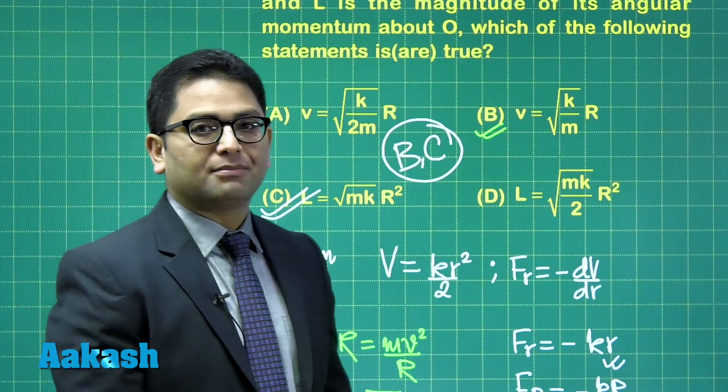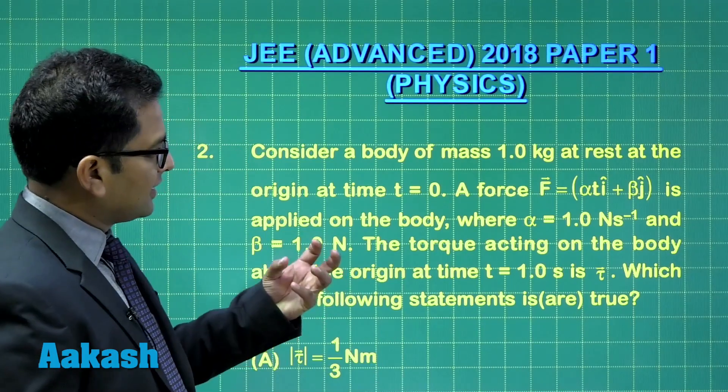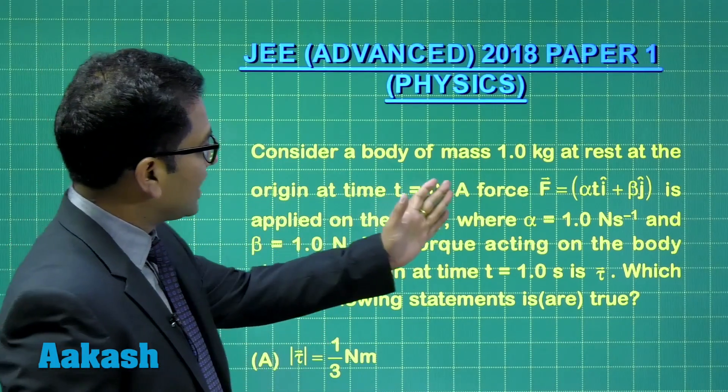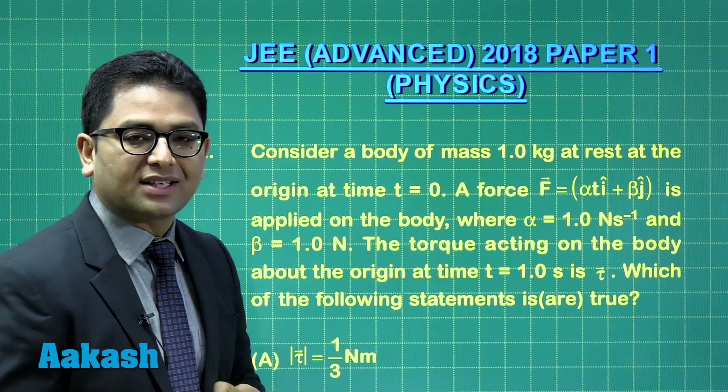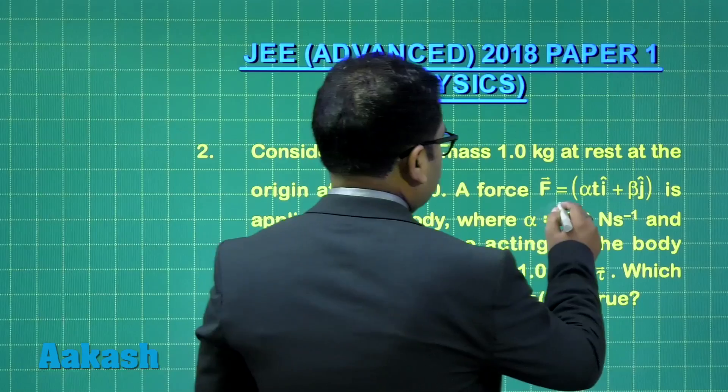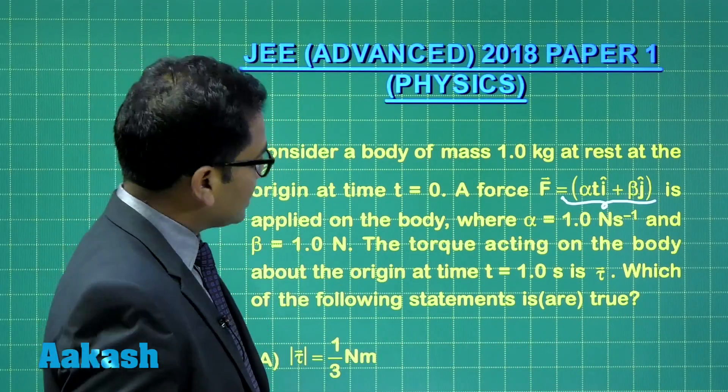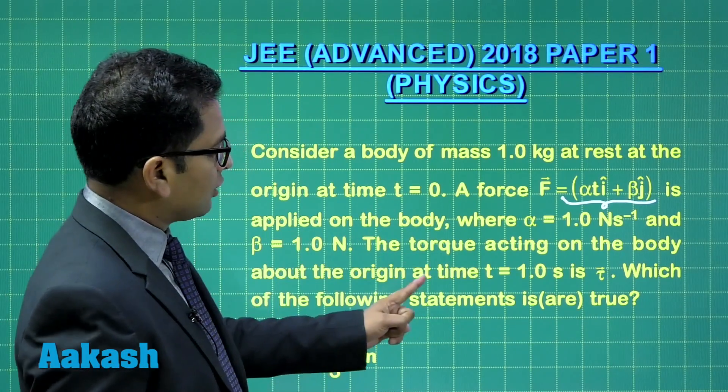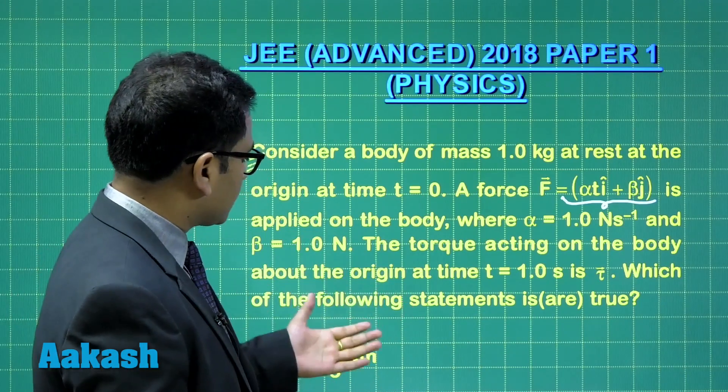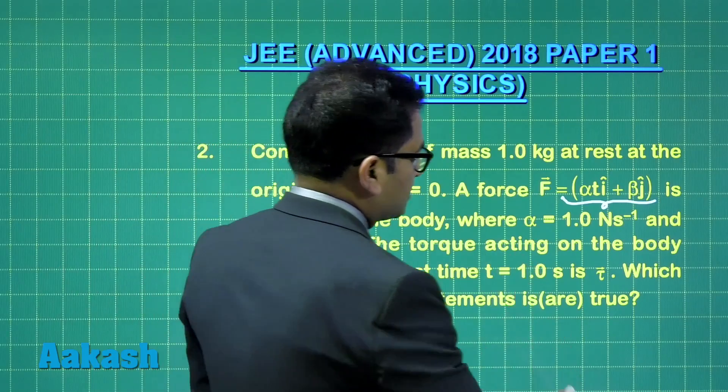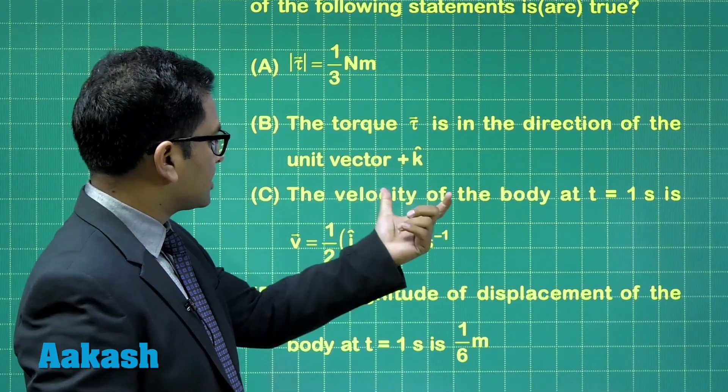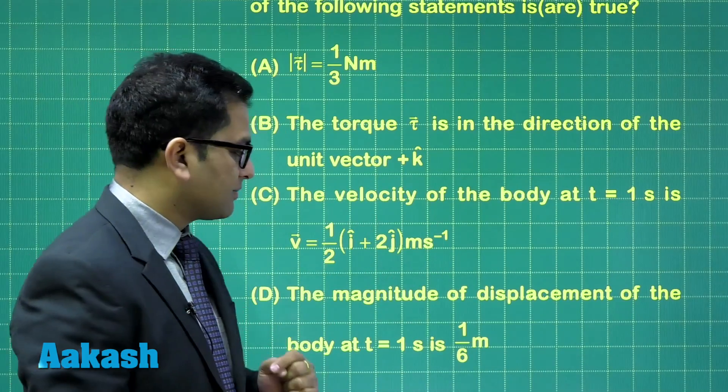Right then, let's move to question number two. Question number two is another straightforward question, where there is a slight element of rotational motion, because the question has asked about the torque. A body of mass one kg at rest at origin at time t equals to zero. So it begins from origin, and the initial speed is zero. It is being acted upon by a force this much, where alpha is one, beta is one, so that will be t i cap plus one j cap. The torque acting on the body about the origin is to be calculated at one second, and that's represented by tau vector. And we need to see which of the following statements are true. So here, my force is t i cap plus one j cap, and what are the options that I need to explore? The torque at one second, the direction of the torque, the velocity at one second, and magnitude of displacement at one second. Straightforward, no much difficulty in solving the question here.